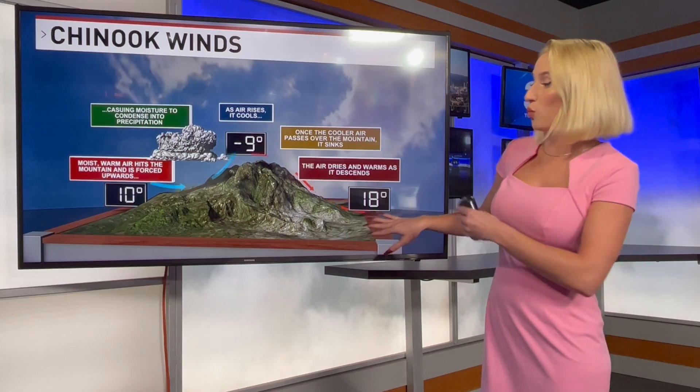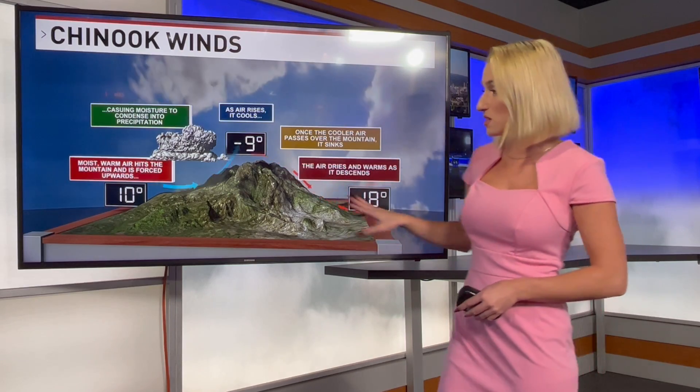That side of the mountain — the windward side and leeward side — the backside is the Chinook winds. This is where it's warmer and drier as compared to the other side of the mountain where it's only 10 degrees. It's 18 on this side. Just a fun fact to share some information. Hopefully you can share it with your friends and family.